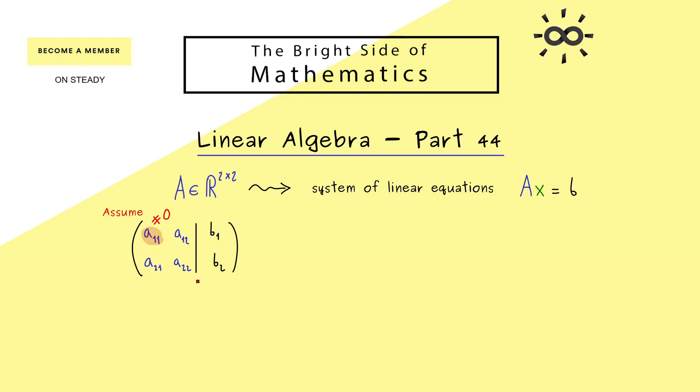And then we already know a₁₁ is our first pivot and we can eliminate this element here in the first step of the Gaussian elimination. And this one we can simply describe as: take the second row and subtract a₂₁ divided by a₁₁ times the first row. So you know this is how it works. We don't change the first row but we change the second row, and we do that in such a way that we get a zero here.